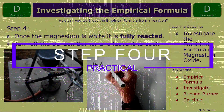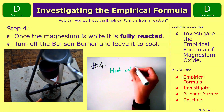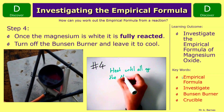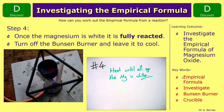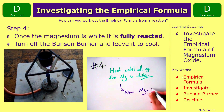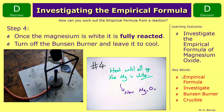Step four: you need to keep on heating until all the magnesium has turned white. When it's all white and no longer glowing, you know that you've made your magnesium oxide and you can turn your Bunsen burner off and leave it to cool.